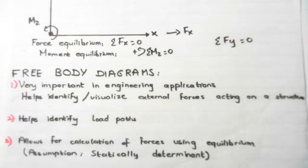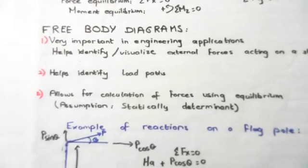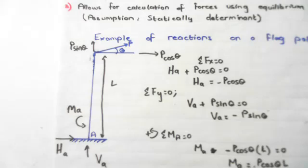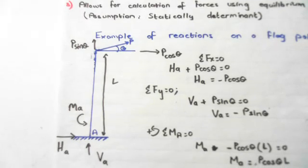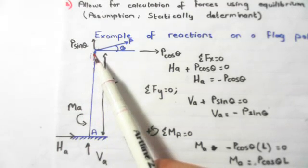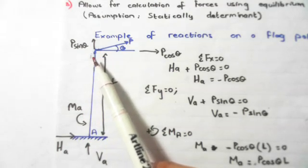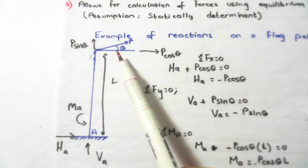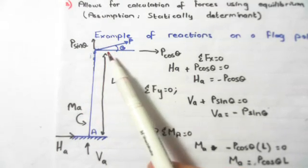Let's do a quick example. Imagine we have the following flagpole. It has a fixed support at the bottom. The height of the flagpole is L. There is a force P applied at an angle theta to the horizontal at the top.